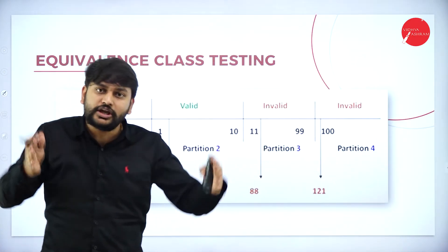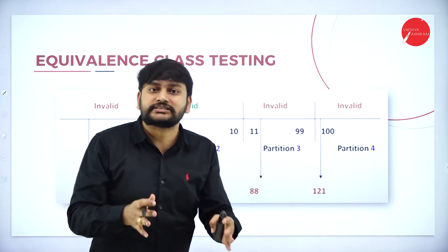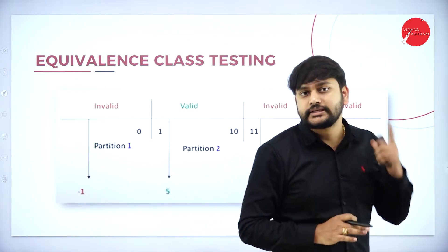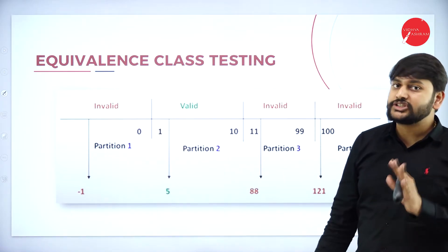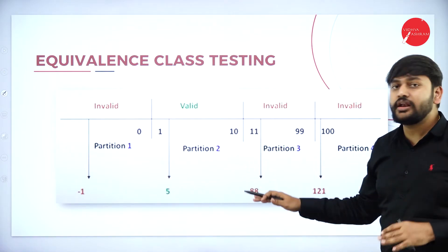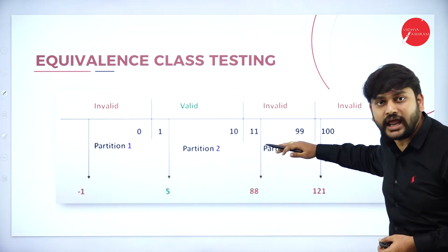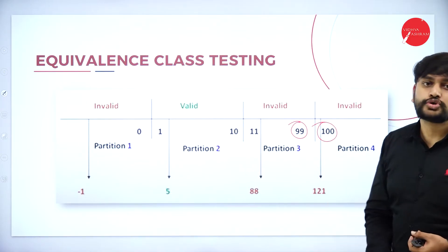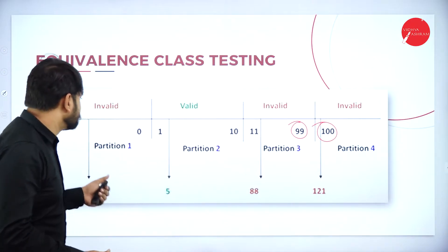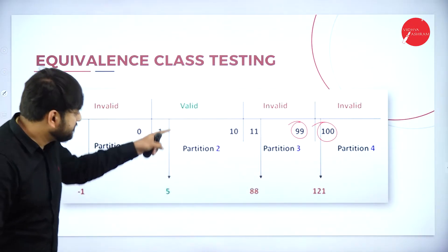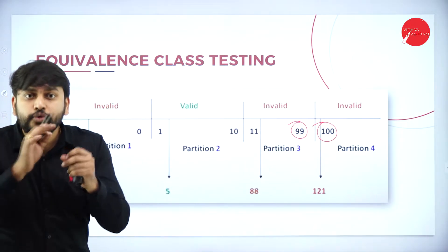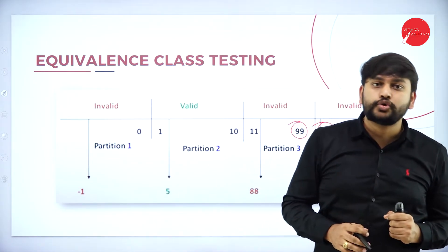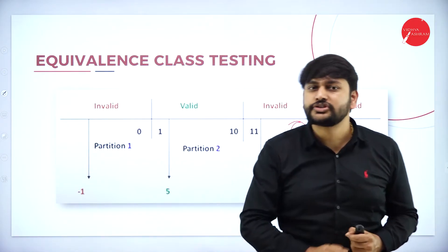I am dividing my class into equivalence classes — subparts, subclasses, or subsets. The main thing to observe is: I will treat 0 as invalid, I will treat values 1–10 as valid, and 99 and 100 as invalid. So these four partitions are created. But why are we creating these partitions? That is very important to understand.